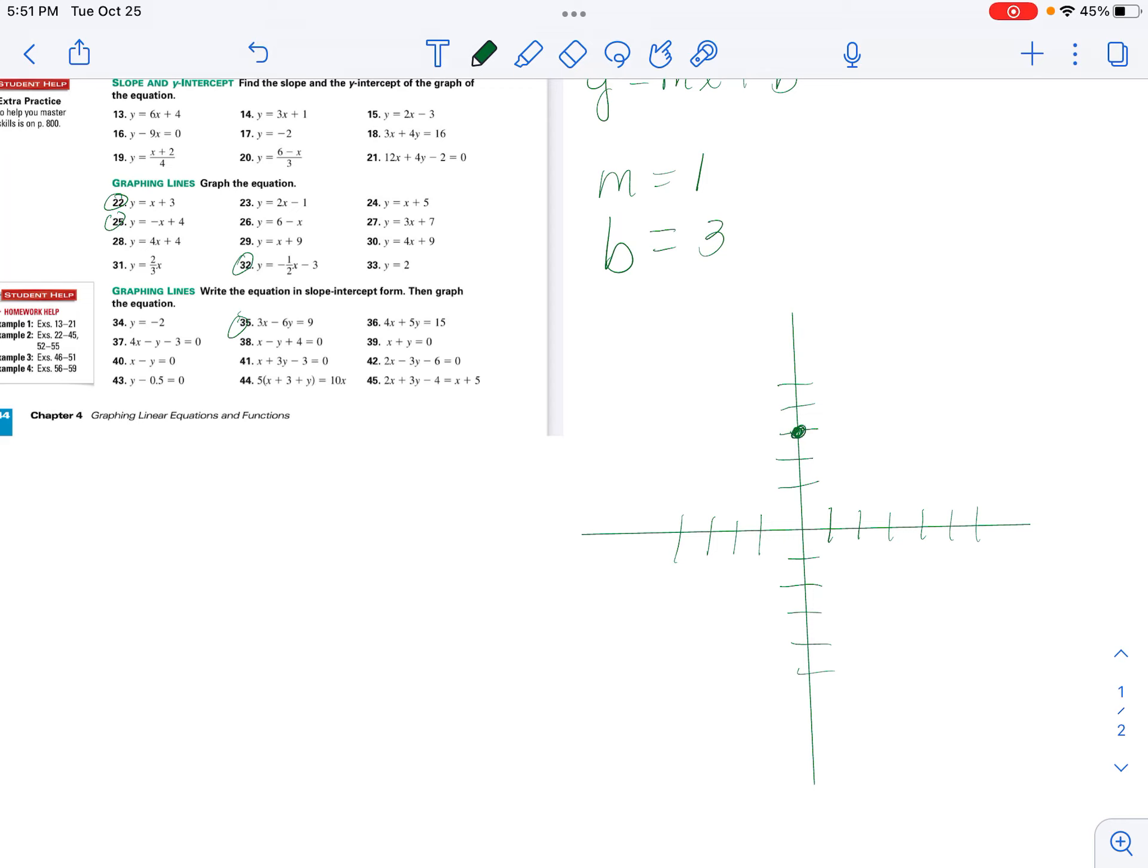Then we go up 1 over 1 because our slope is 1 over 1. Up 1 over 1. Or you can go down negative 1 over negative 1, because negative 1 divided by negative 1 is a positive 1. Down 1 over negative 1. And then you draw your line.